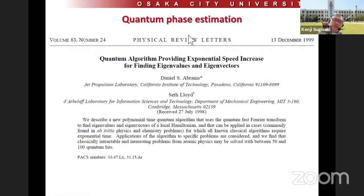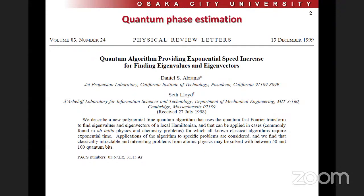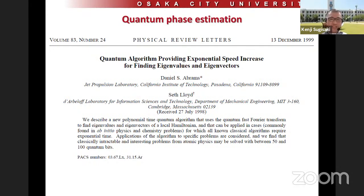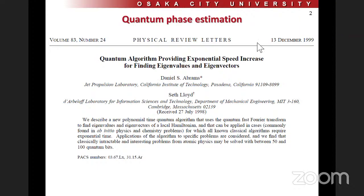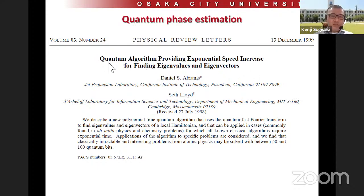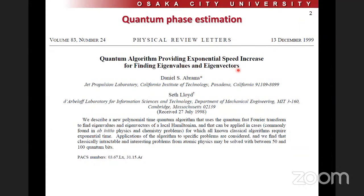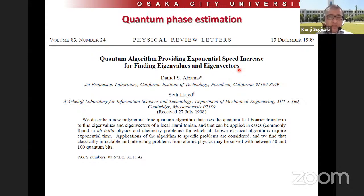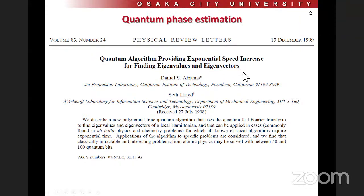The quantum phase estimation was first proposed by Abrams and Lloyd in 1999 in this paper. The paper title is providing a potential speed increase for finding eigenvalues and eigenvectors. If we use the molecular Hamiltonian, the phase estimation obtains the eigenvalue of the Hamiltonian — which means the eigenenergy of the system — and also eigenvectors, which correspond to the wave function.